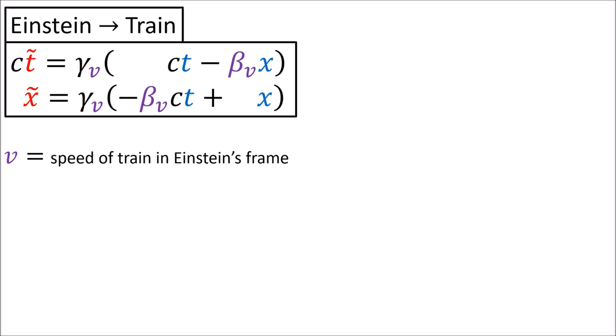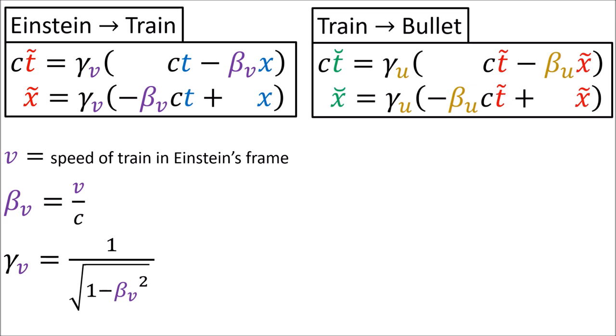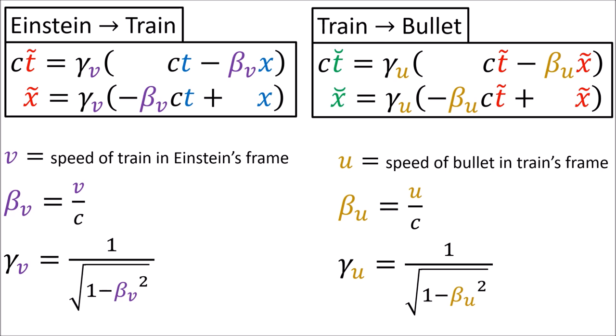Velocity v has corresponding coefficients beta-v, which equals v over c, and gamma-v, which equals 1 over the square root of 1 minus v-squared over c-squared. Remember that beta is just a fraction of the speed of light, so it's between 0 and 1. The other Lorentz transformation changes from the train's frame to the bullet's frame, using velocity u — the velocity of the bullet relative to the train — with coefficients beta-u and gamma-u.